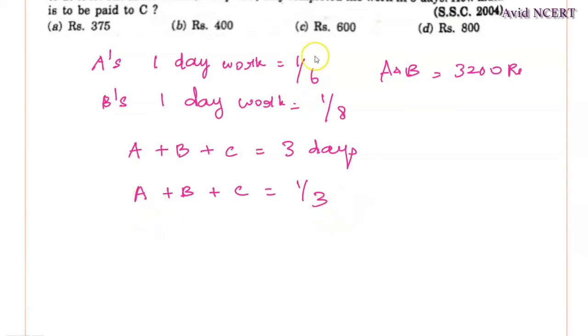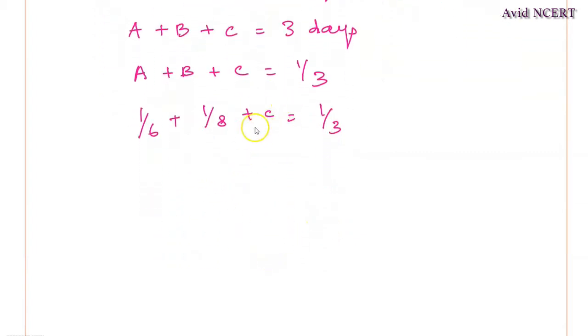Whereas, we know A's 1 day work is 1/6, substituting the values, plus B's 1 day work is 1/8, plus C equals 1/3. So simplifying this, we can find C's 1 day work, which is C equals 1/3 minus 1/6 and 1/8 goes that side, which is minus 1/6 minus 1/8.